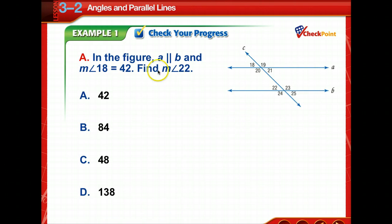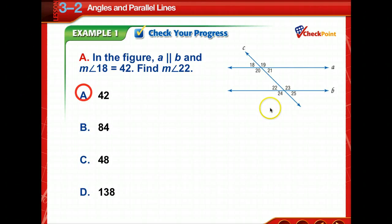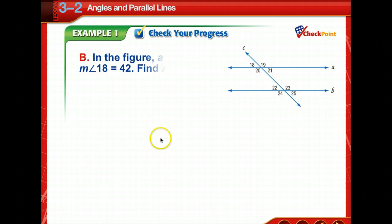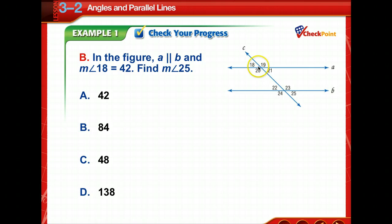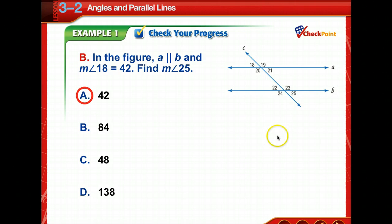Time to check your progress. We are given that lines A and B are parallel, and the measurement of angle 18 is 42. Find the measurement of angle 22. Pause the video, do the work, and come back. Angles 18 and 22 are corresponding angles, so they have the exact same measure — 42. Next, given the same figure, find the measure of angle 25. Angles 18 and 25 also have the same measurement of 42.